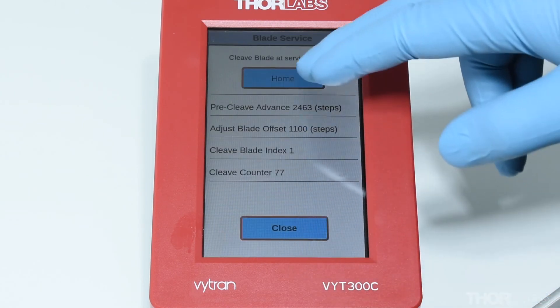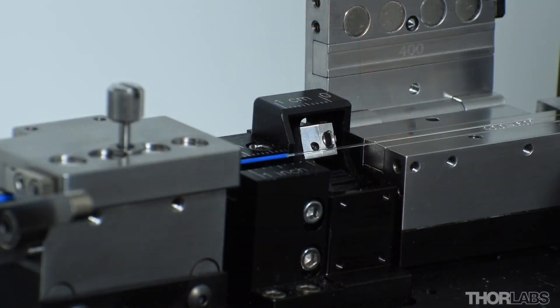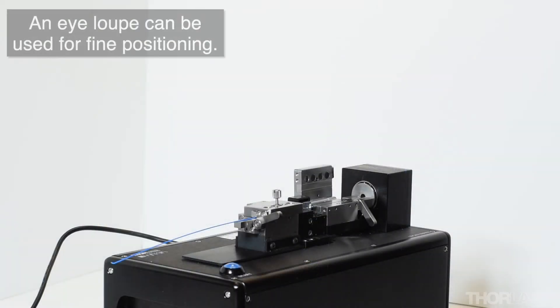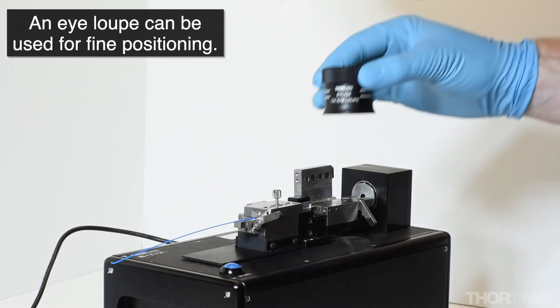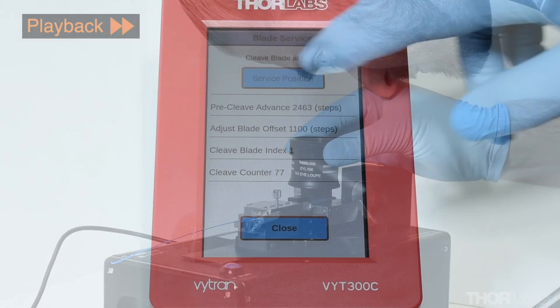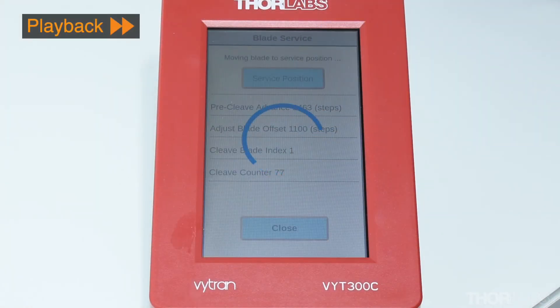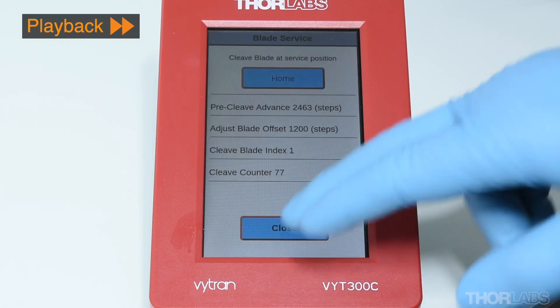Use the handset controller to home the cleave blade. Once the new blade offset has been set, move the blade to the service position once again and observe the end position of the blade relative to the reference fiber. It may be helpful when making fine adjustments and determining when the blade first hits the fiber to use an eye loop. Some iteration will be required to achieve a blade offset that brings the blade close to, but not touching, the fiber.